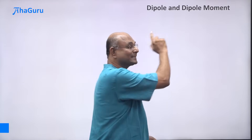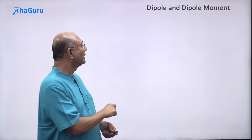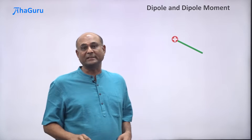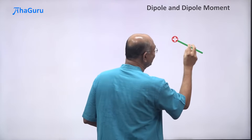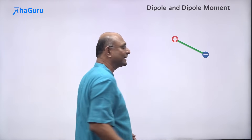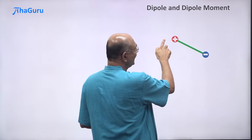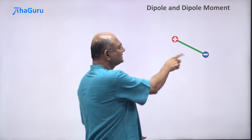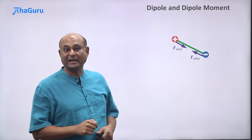Let us now learn about dipoles and dipole moment. What exactly is a dipole? To understand that, I'm going to construct a dipole by first taking a rigid rod, then sticking a positive charge q at one end and an exactly equal but opposite negative charge minus q on the other end. These charges will attract each other with a very large force.